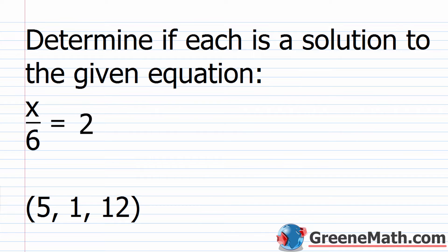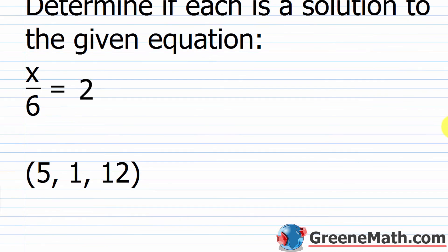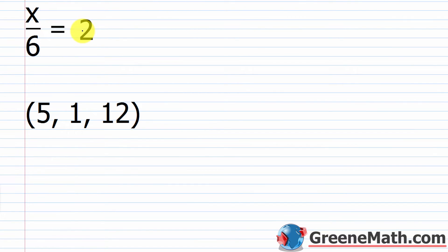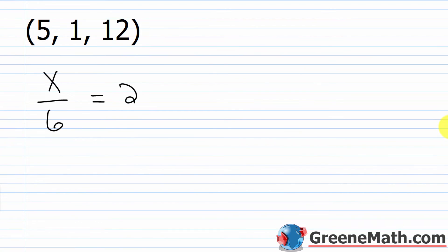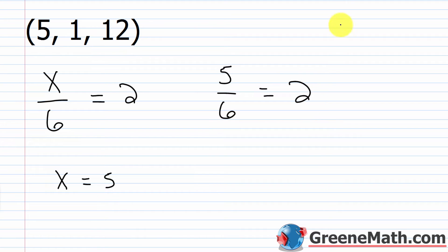Let's take a look at a practice exercise. We want to determine if each value is a solution to the given equation: x over 6 is equal to 2. The values we'll try are 5, 1, and 12. Starting with x equals 5: plugging 5 in for x gives 5 over 6 — that does not equal 2. 5/6 is less than 1, so it can't be 2, and this doesn't work as a solution.